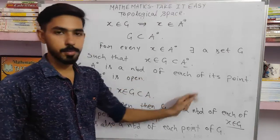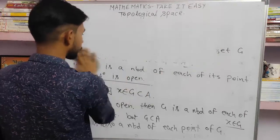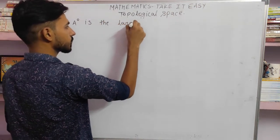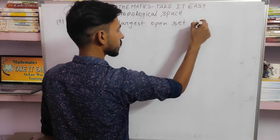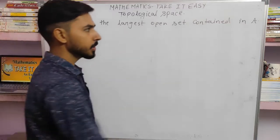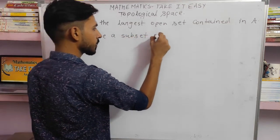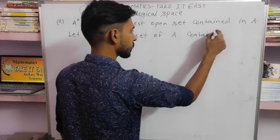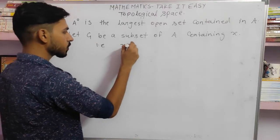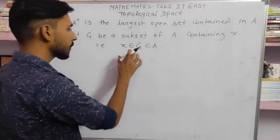This is our first condition which we have proved. Now let us talk about the second condition — we have to show that A interior is the largest open set contained in A. Let G be an open subset of A containing x, that is x belongs to G and G is a subset of A.